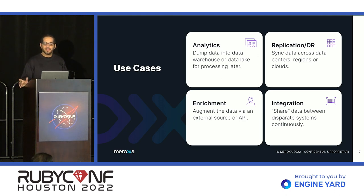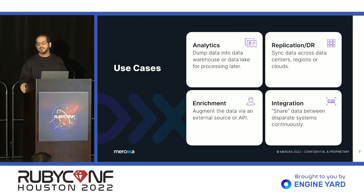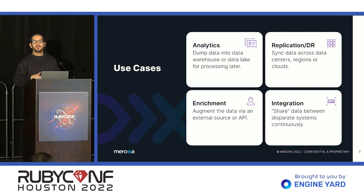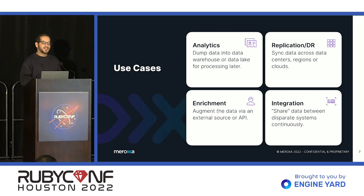Some common use cases: analytics is probably one of the most common. Essentially, you're taking data from a number of different sources — it could be your operational database, maybe a Postgres database backing your Rails application, support tickets in Zendesk, CRM data from Salesforce — and you're pulling them all into a single data warehouse where your data scientists run queries and derive insight. Another common use case is replication and disaster recovery, where you're continuously pulling data from one place and putting it into another region, data center, or cloud, across geographical distances, to have another place you can recover from. This could also involve different database types — for example, Postgres on RDS in AWS copied over to SQL Server in Azure.